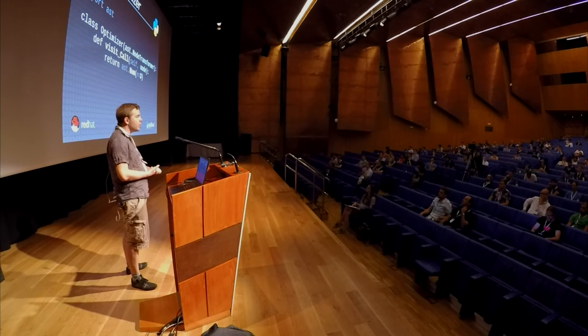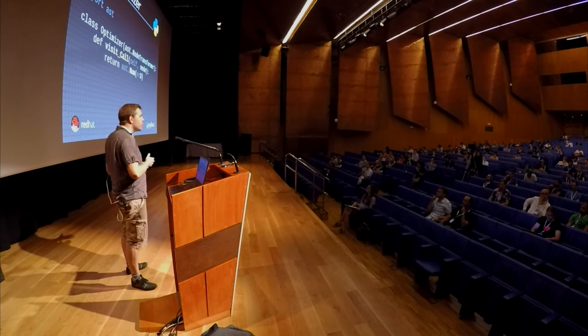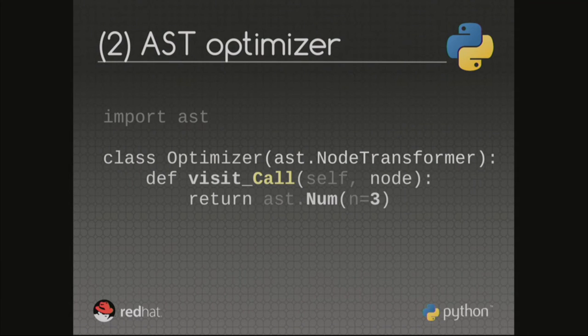To give the simplest AST optimizer — just replacing a call with its result — you use the ast module from the standard library. The module has a visit method, and depending on the method name you enter a node type. In this case, we replace the call node with the result.